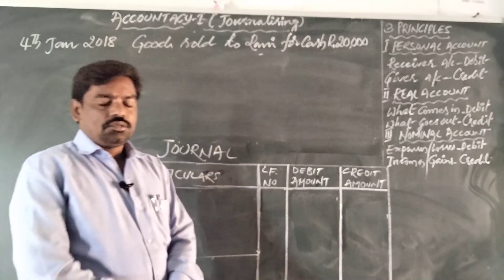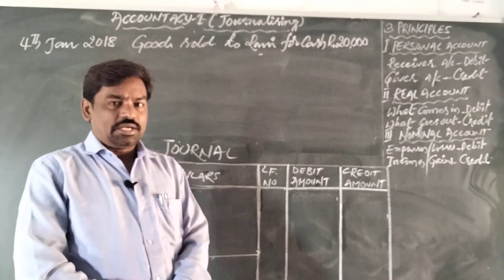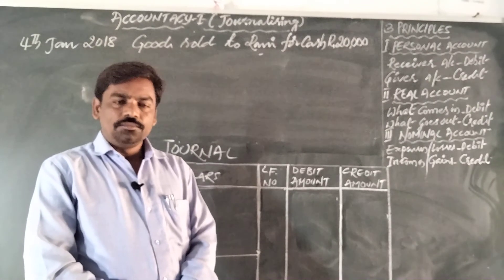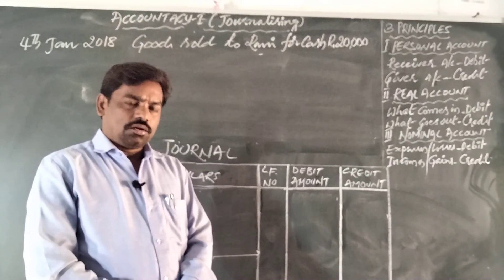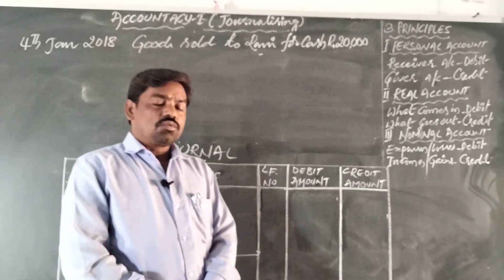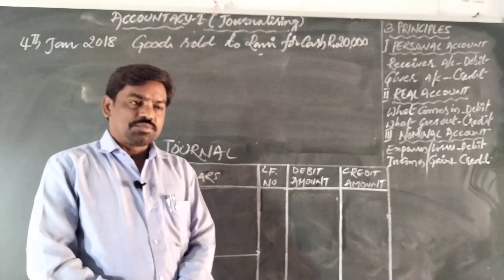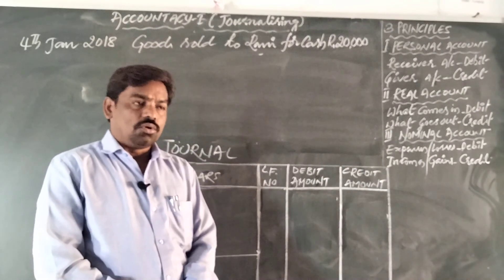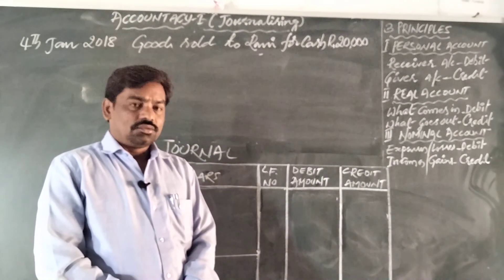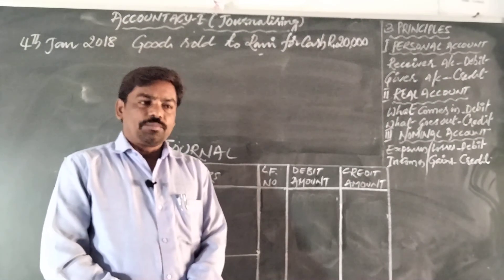Students, you all know that there are three types of accounts: personal account, real account, and nominal account. These accounts also have their own principles, called the golden principles of accounting. Let us look at the personal account principle first.